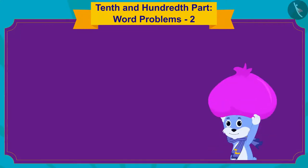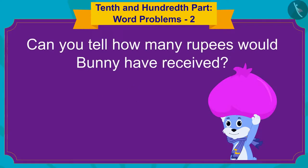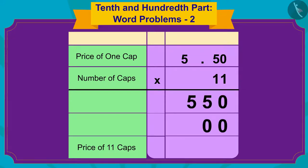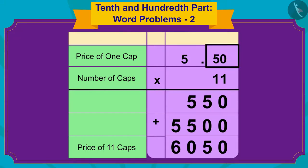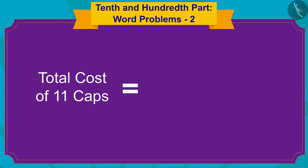Children, if Bunny had sold only eleven caps instead of a dozen caps, can you tell how many rupees would Bunny have received? You can stop the video and find the answer. We will first multiply 5.50 by eleven in this way, and now because there are two digits after the decimal point in 5.50, we will write the decimal point in the answer in this way.